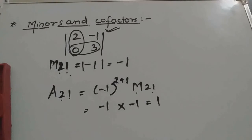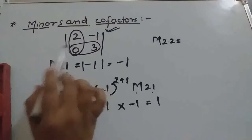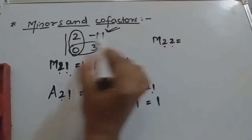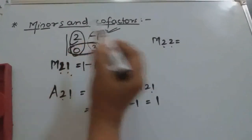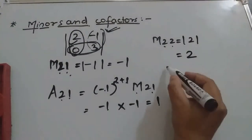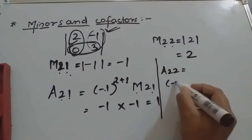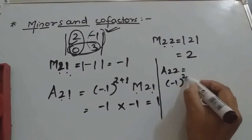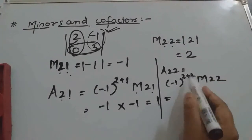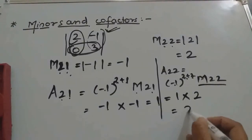Similarly, M22 means we delete the second row and second column. The element left gives determinant of 2, so M22 = 2. Then A22 = (-1)^(2+2) × M22. Since 2+2=4, (-1)^4 = 1, and M22 = 2, so A22 = 2.